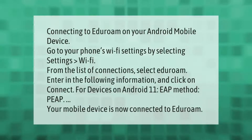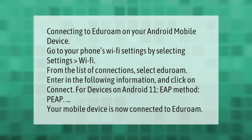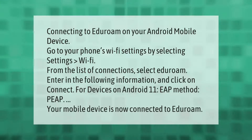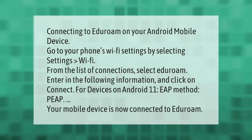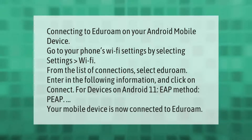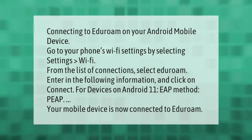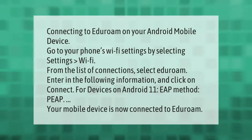Connecting to eduroam on your Android mobile device: go to your phone's Wi-Fi settings by selecting Settings > Wi-Fi. From the list of connections, select eduroam. Enter the required information and click Connect. For devices on Android 11, set EAP method to PEAP. Your mobile device is now connected to eduroam.